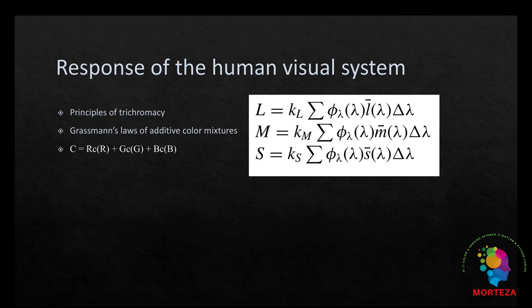Then, they will also match each other when viewed in the same conditions. So, if the same amount of primaries are used to match two stimulus, those stimulus will have the same tristimulus values. Tristimulus values is the amount of each primary used to define the color of that stimulus.